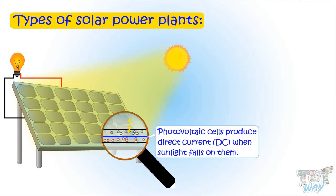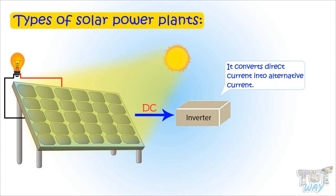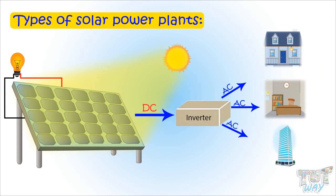This direct current, known as DC, is then sent to the power inverter which converts it to alternating current, or AC. It is in this form that energy is supplied to homes, offices, and other buildings, which we also call electricity.